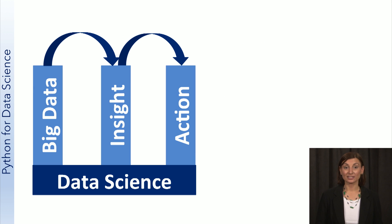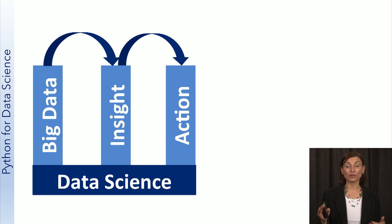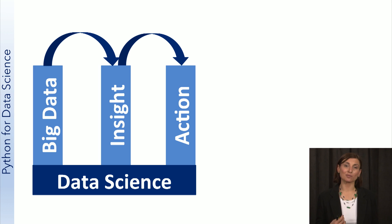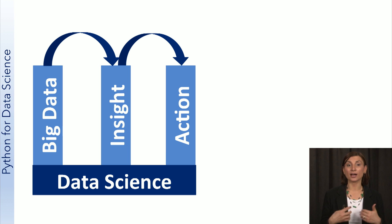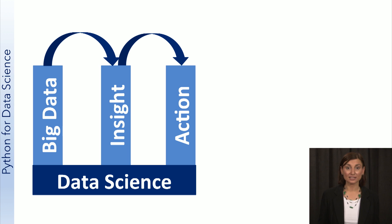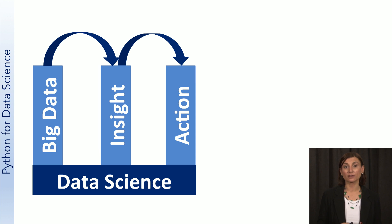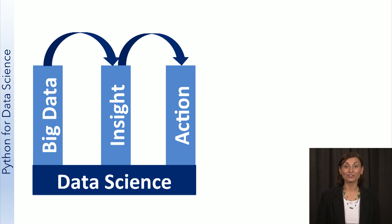We have all heard it: data science turns data into insights or even actions. But what does that really mean? Data science can be thought of as the basis for empirical research, where data is used to inform our hypotheses and provide observations. In many cases, this data is used either by businesses or by scientists to inform their understanding of a phenomenon. Because there are often large troves of data which we can mine for insights, we often call this big data.